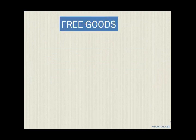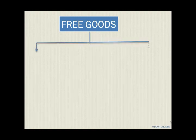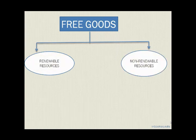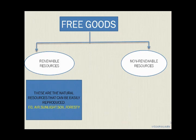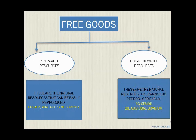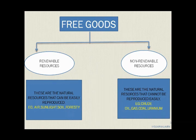Free goods are natural resources consumed free of charge. Such natural resources are broadly classified as renewable resources and non-renewable resources. Renewable resources are natural resources that can be easily reproduced or replenished — major examples are air, sunlight, soil, and forestry. Non-renewable resources are natural resources that cannot be reproduced easily — main examples are crude oil, gas, coal, and uranium.